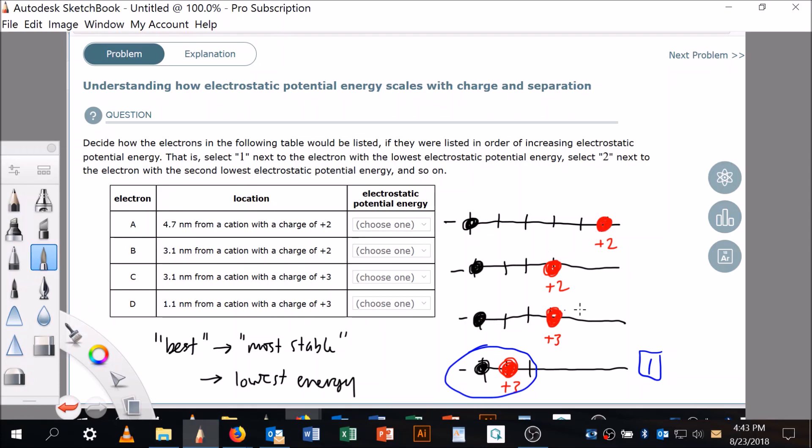Now these are both closer than that one, and this has a bigger charge. That's going to be two, because this is the second happiest. The happiest is right here, and it's the most stable, so it's going to be the lowest energy. One next to the lowest, two next to the second lowest. And it looks like now the question is, which of these is happier? It's negative and a plus that are attracted to each other. If they're happiest, it means they're the closest. They're closer, so that's going to be three, and this one's the last.